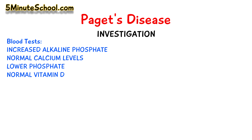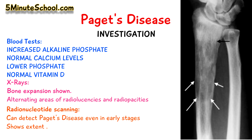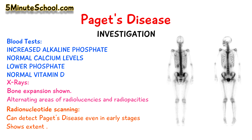One of the ways of investigating Paget's disease is with blood tests. We can see raised alkaline phosphate levels. Calcium levels are usually normal, but there are also low phosphate levels and normal vitamin D levels. X-rays can be used to show bone expansion with alternating areas of radiolucencies and osteosclerosis — these patches of white and black — and radionuclide scanning highlights areas of active disease and identifies the extent of Paget's disease.